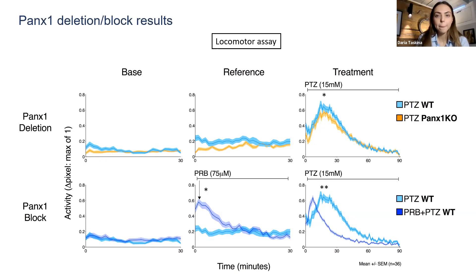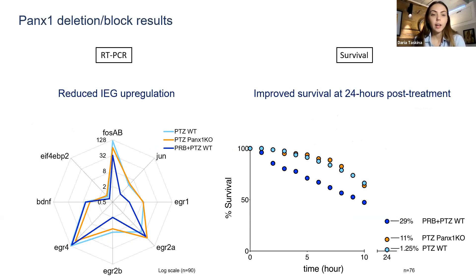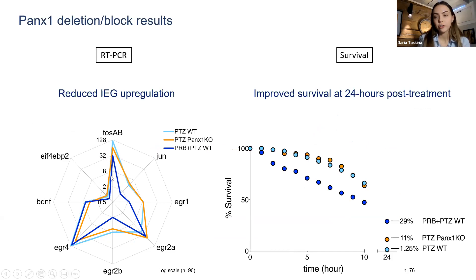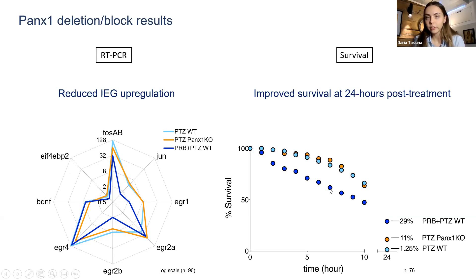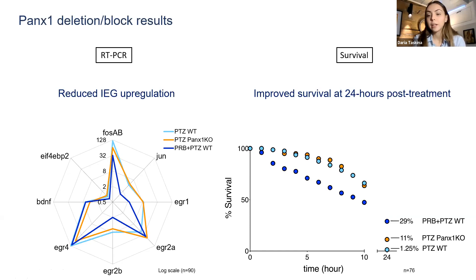We also looked at immediate early genes using real-time PCR. These genes are upregulated during epilepsy or stress response, and we've seen that with both Pannexin-1 deletion and Probenecid blocking, these upregulations are reduced — on a logarithmic scale, a 100-fold upregulation is reduced to 50 or 30 in some genes. For survival, in the first 10 hours, wild type and Pannexin-1 knockout are fairly similar, while Probenecid pre-incubated wild types do poorly — likely due to Probenecid interacting with metabolism and potential two-drug toxicity. Interestingly, after 24 hours, Probenecid pre-incubated fish are doing the best, followed by Pannexin-1 knockout, then wild type.